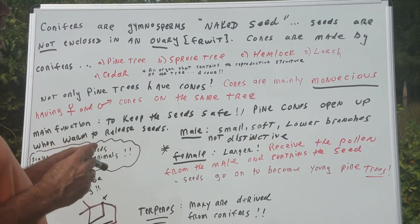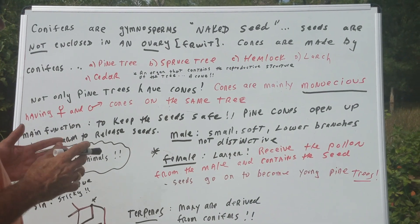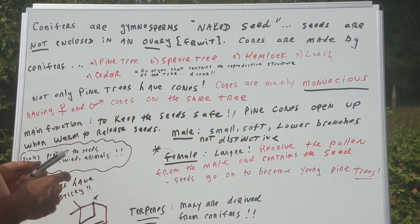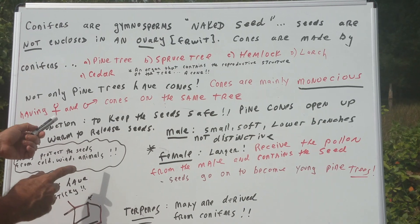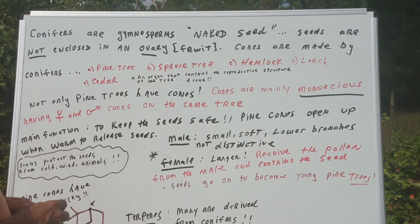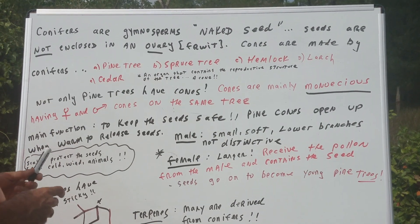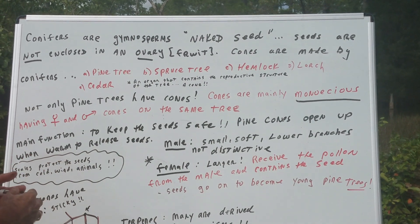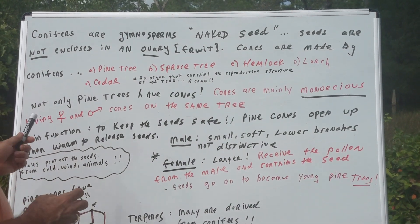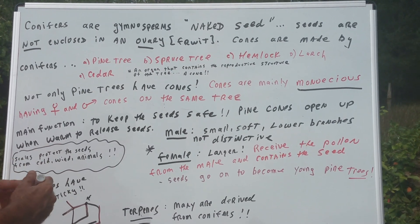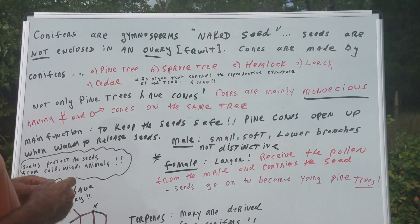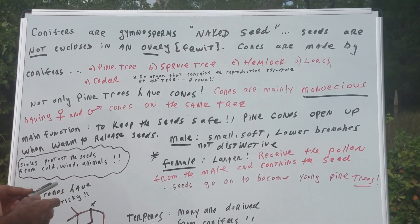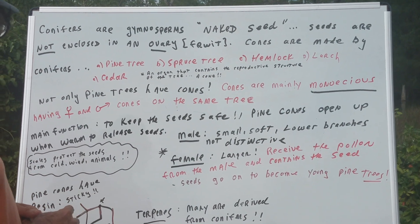Dioecious as well as monoecious. Dioecious means it's distinctively male or distinctively female. But if you looked on a tree, you would see both male and female cones, so we would call that monoecious. The pine cones you usually see on the ground or looking up are the females. The females are much larger. Remember, the main function is to keep the seeds safe, so pine cones open up when warm to release their seeds. They have scales to protect the seeds from cold, wind, and animals.